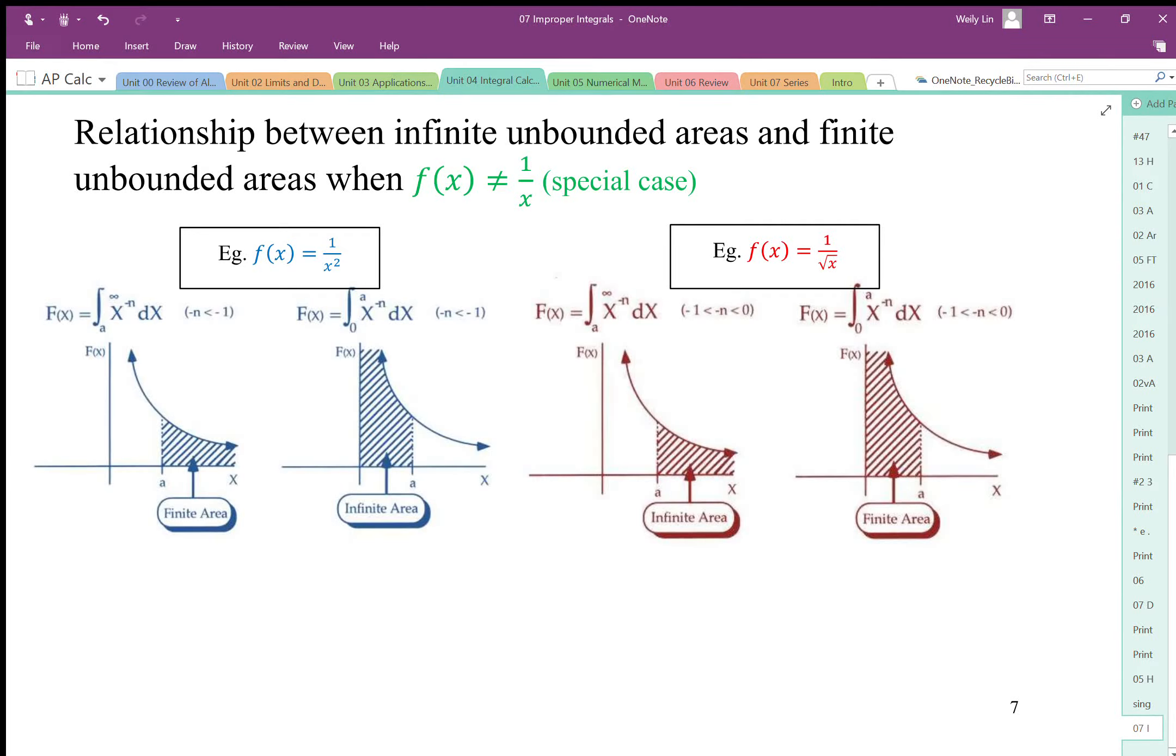There is a useful relationship between the infinite unbounded areas and the finite unbounded areas for all except for the special case of 1 over x. So we've summarized it here.